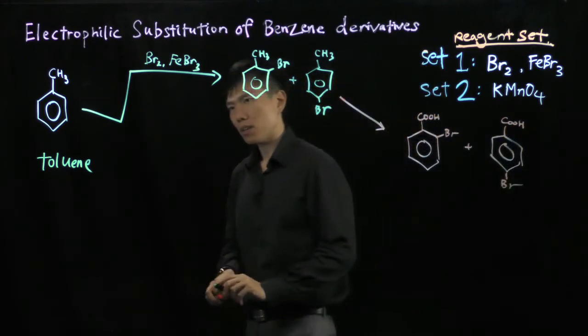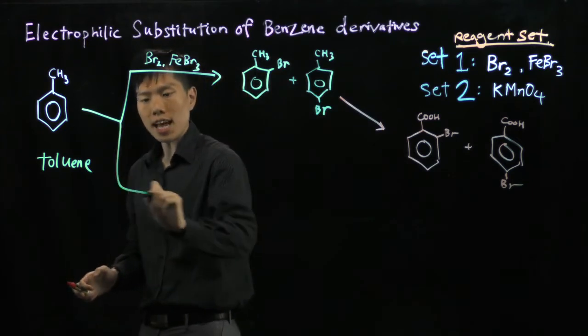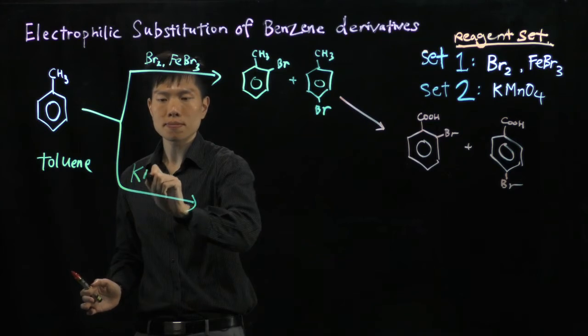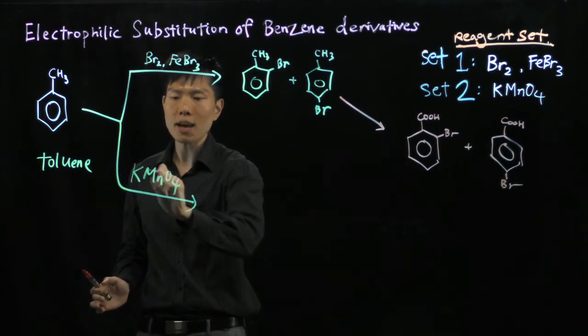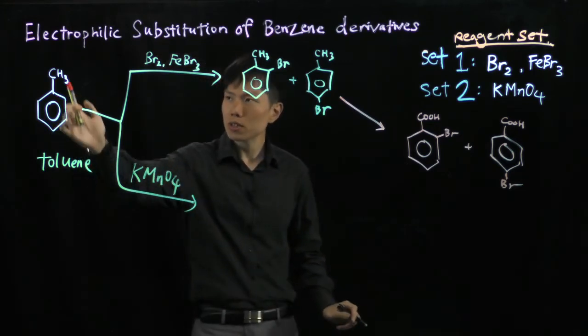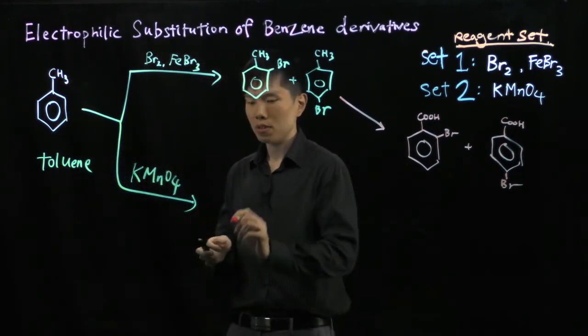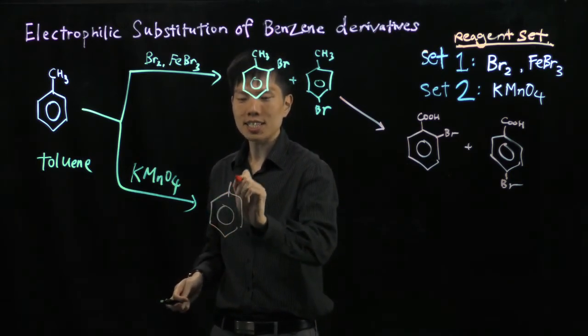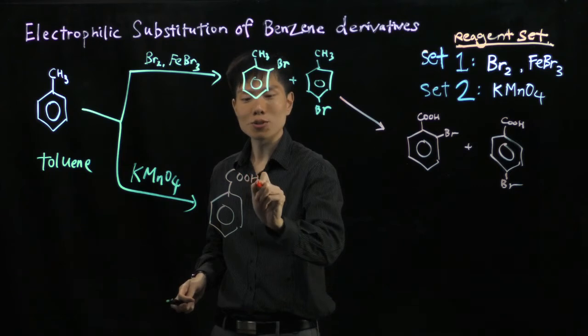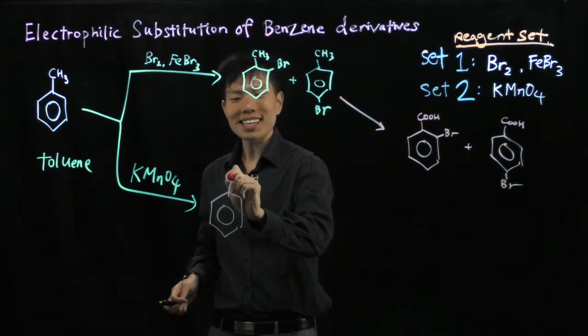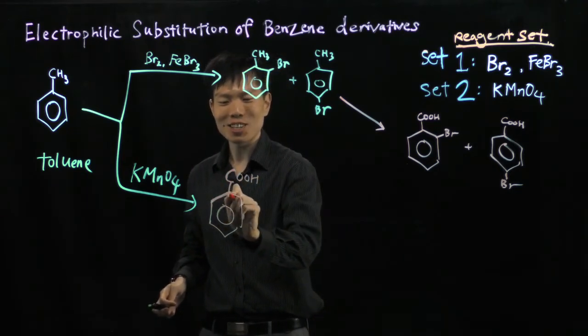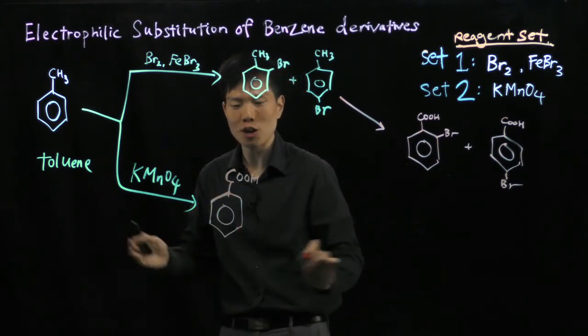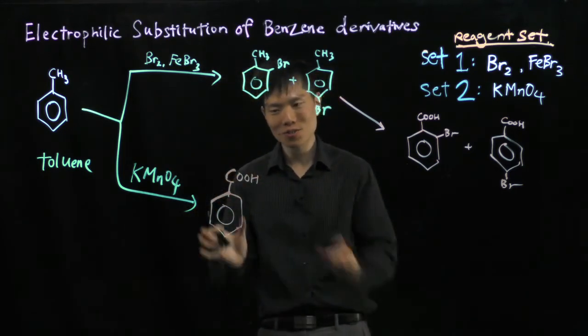Now let's see what happens if methylbenzene reacts with permanganate first. The CH3 becomes COOH, giving us benzoic acid, which is a white solid. Mind you, acids don't have to be liquids—they can be solids due to high molecular weight and strong intermolecular forces.